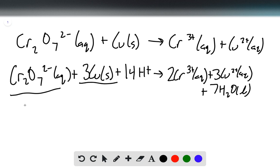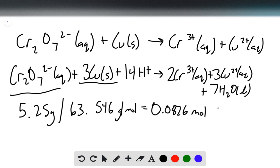Now we can determine our moles of copper by taking 5.25 grams of copper and dividing by its molar mass, 63.546 grams per mole. That gives us 0.0826 moles of copper.